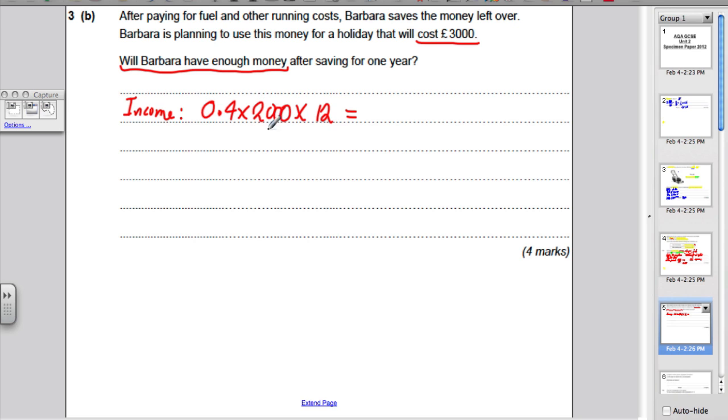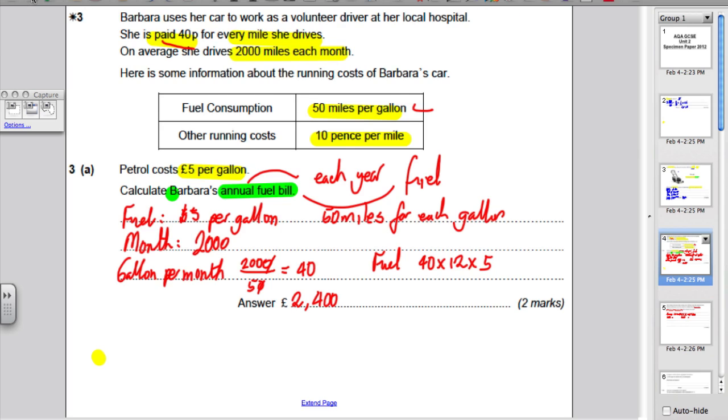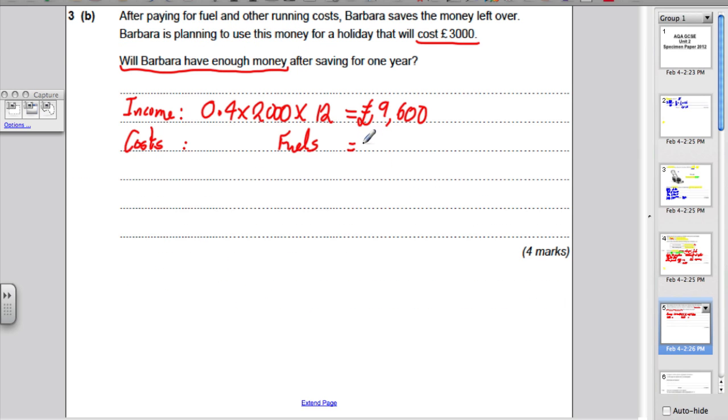And 800 times 12, well, 800 times 12 must be £9,600. So, her income is £9,600. Well, what are her costs? Well, we already know her fuel costs. We've done that in Part A. Her fuel costs, we said in Part A, are £2,400.